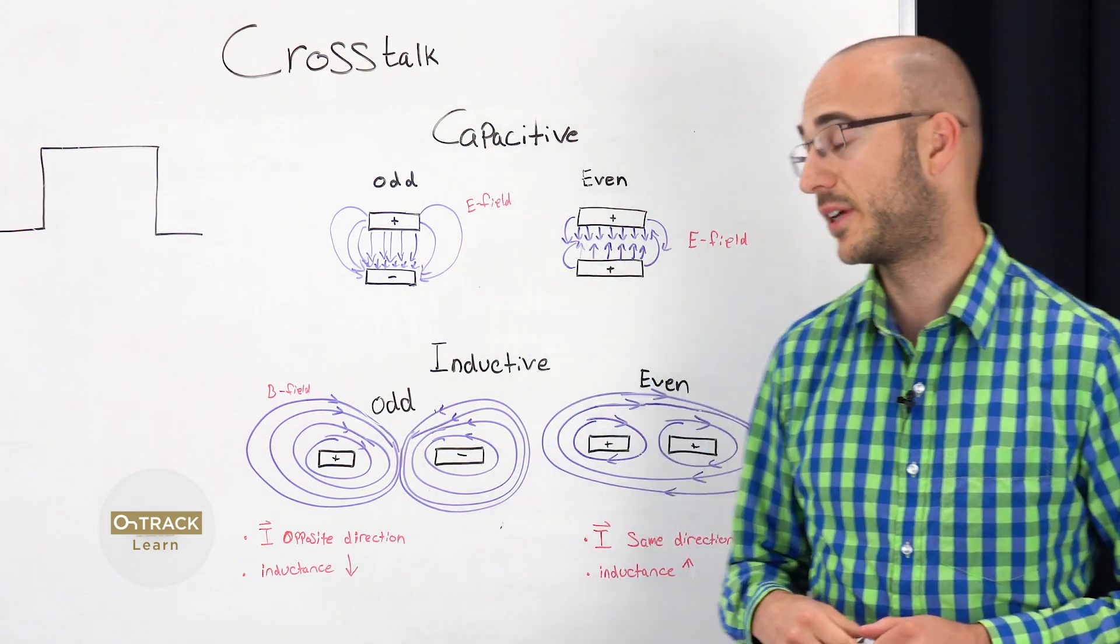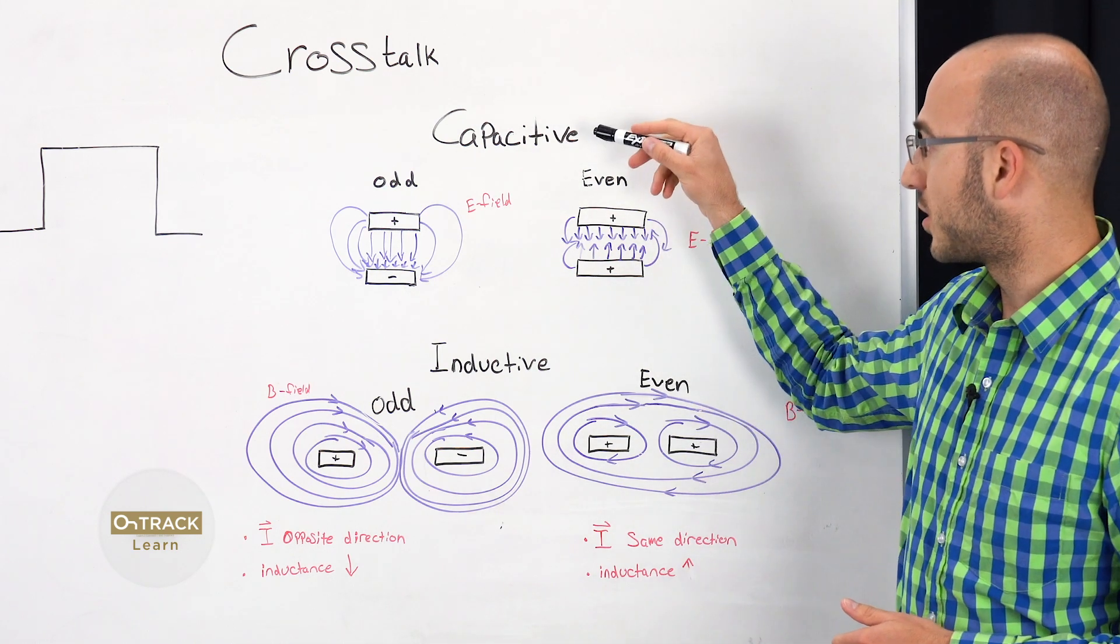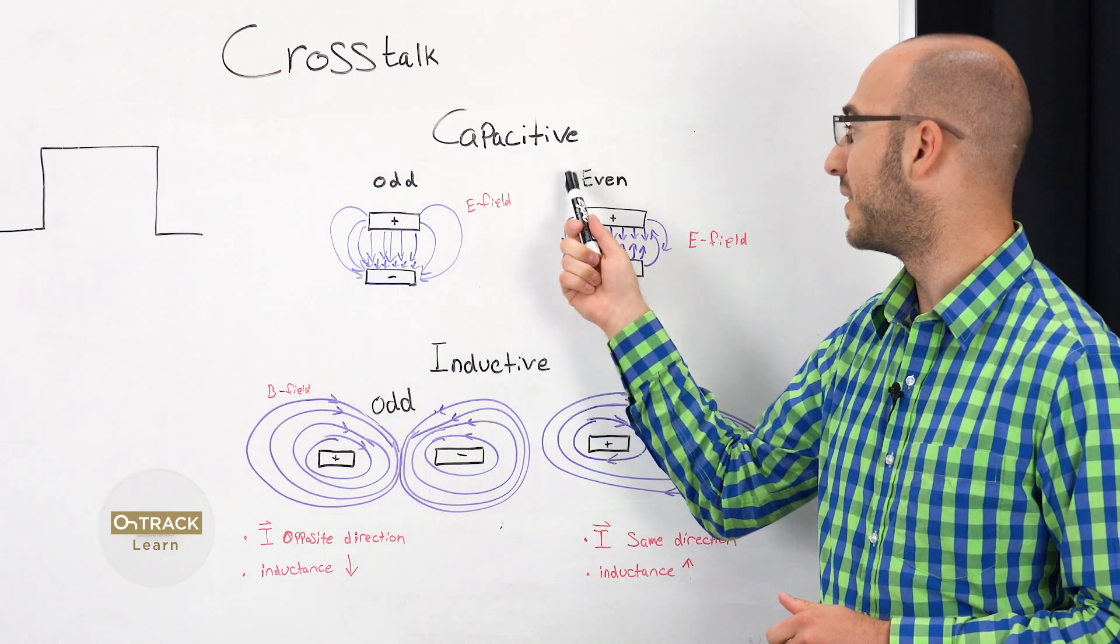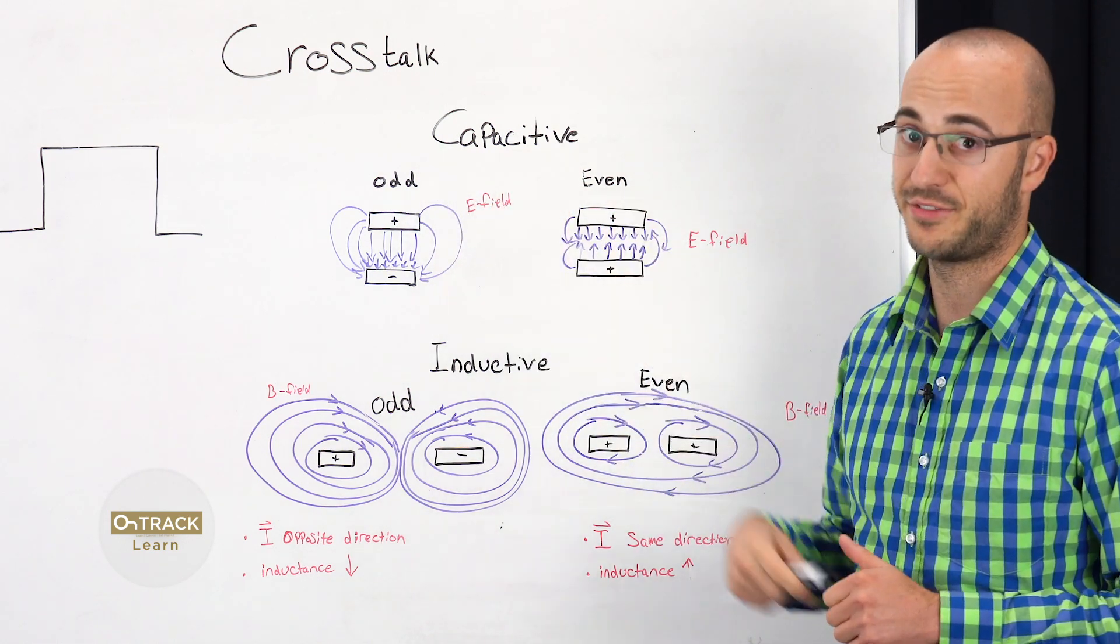And that's what we're going to talk about today. So there's two types of crosstalk. There's capacitive and inductive. And also odd and even mode. And that's just out of phase and in phase.